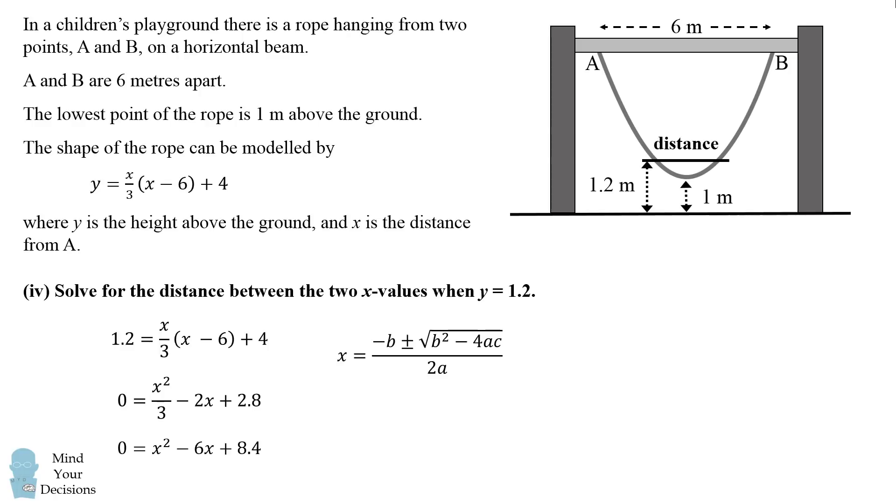We can now solve for the x values by using the quadratic formula. x is equal to the opposite of b plus or minus the square root of b squared minus 4ac all over 2a.